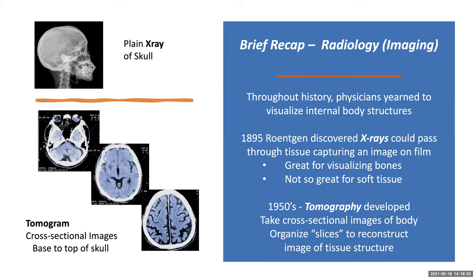Let's take a moment for a brief recap of imaging — how we see inside the body. In 1895, Roentgen discovered x-rays could pass through tissue, capturing an image on film. In the upper left-hand corner, you have an example of what's called a plain x-ray of a skull — the patient is laying on the table, a picture is taken from the side, and we can see the bones of the skull, the spine, the jaw, the teeth.